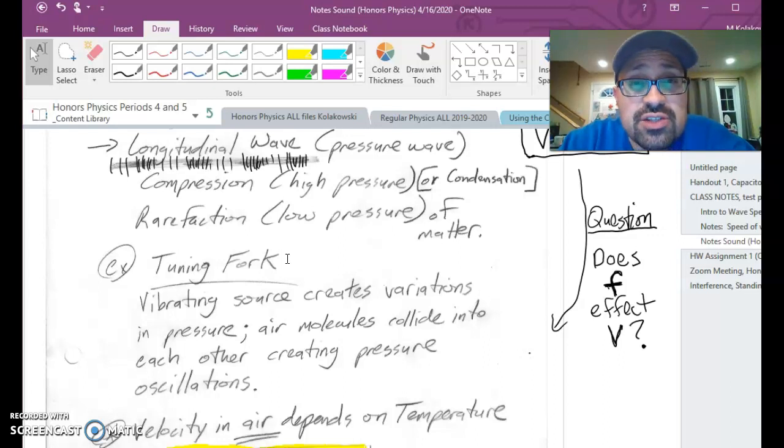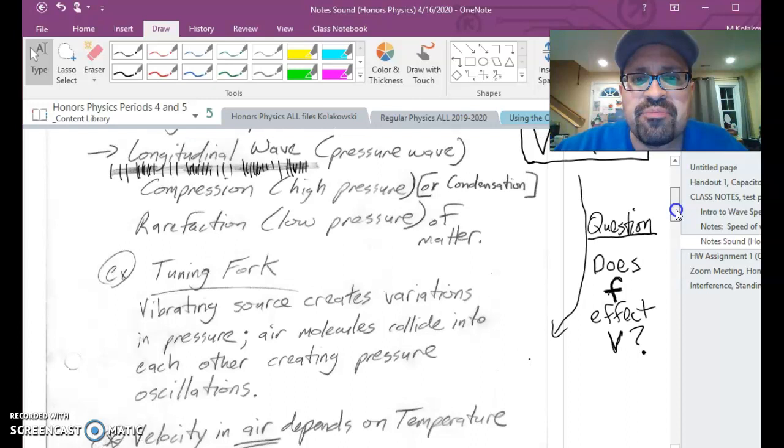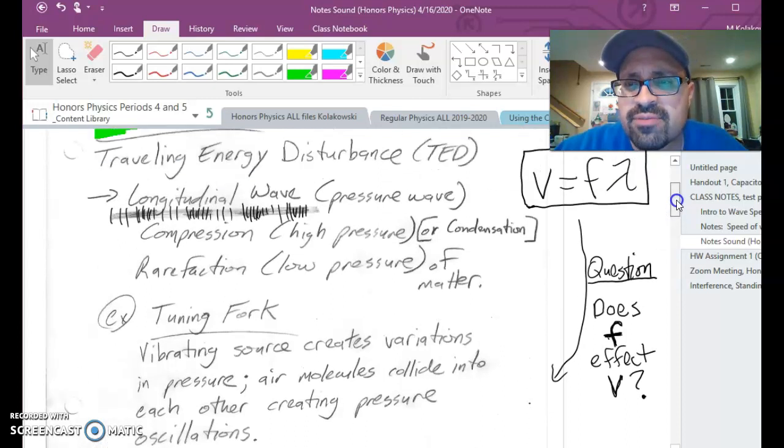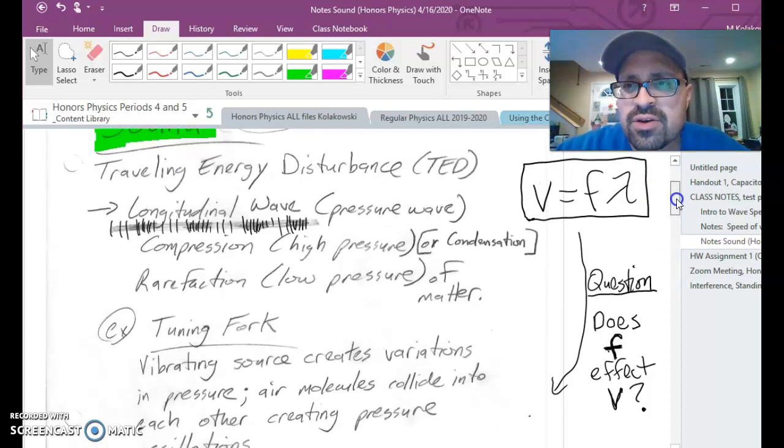High pitch is like a screech. On the other hand, low pitch, like a deep tuba, bassy sound. Those are going to be objects that vibrate a little bit slower. Things that vibrate faster give you the high pitch. Things that vibrate slower give you the low pitch. Both of those circumstances create a pressure wave. Before I go down any further here on the notes, it says, does frequency affect V or the wave speed?